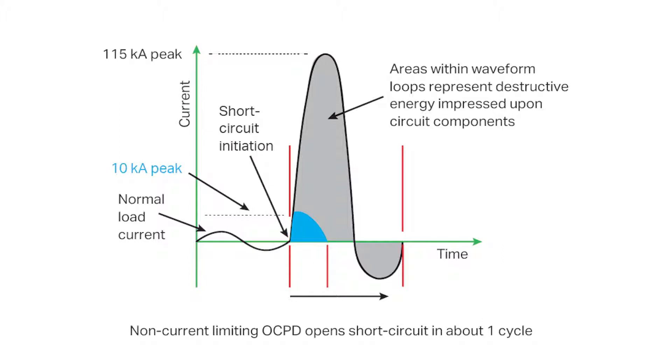The shaded area under the curve represents the energy being dissipated in the circuit, with both magnetic forces and thermal energy being directly proportional to the square of the current, making it important to limit the short circuit current to as small a value as possible. The maximum magnetic forces vary as the square of the peak current, and the thermal energy varies as the square of the RMS current.